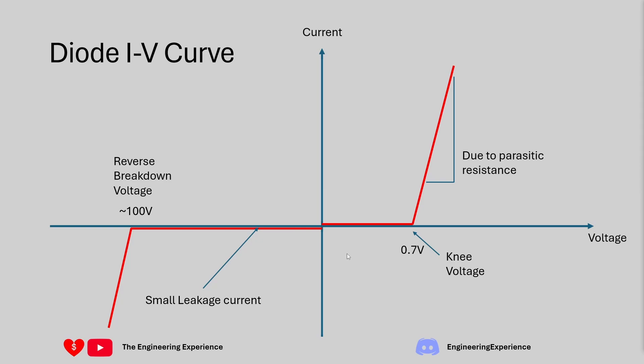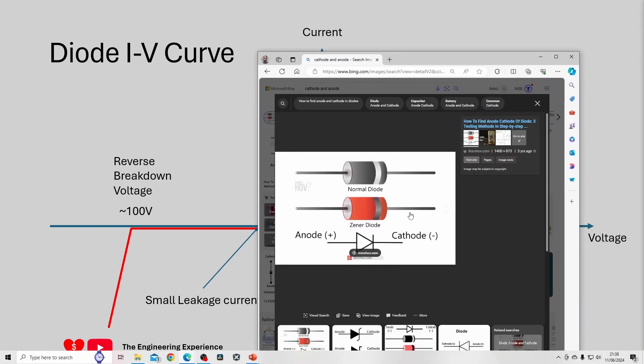A typical silicon diode may have a reverse breakdown voltage of 100 volts but this does depend on the diode itself so read the datasheet. So I hope the diode explanation for the diode helped. I did want to quickly show the anode and the cathode so this is the symbol for the diode and this is the anode and this side is the cathode.